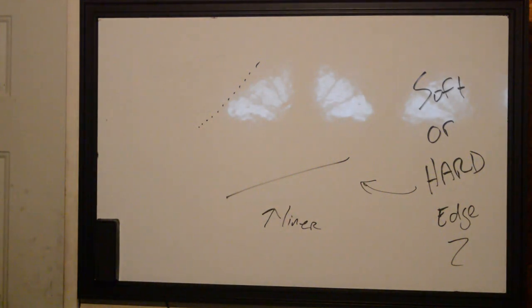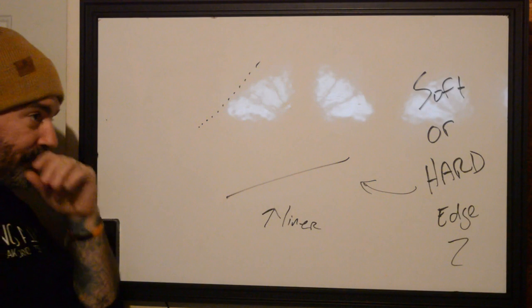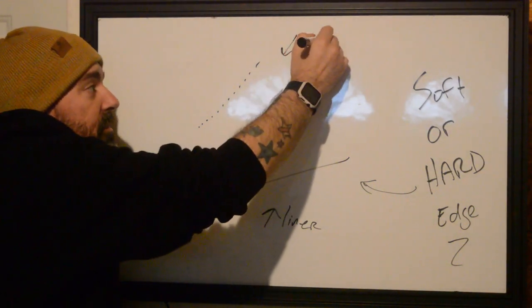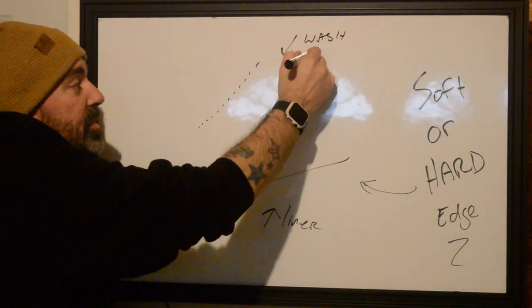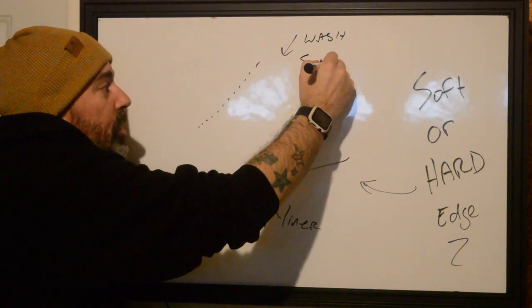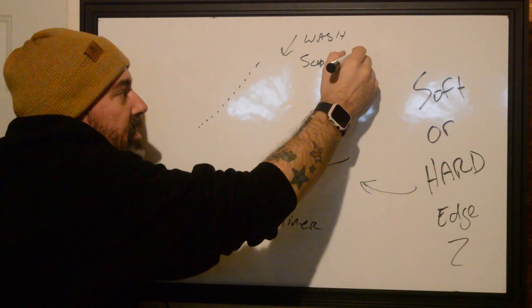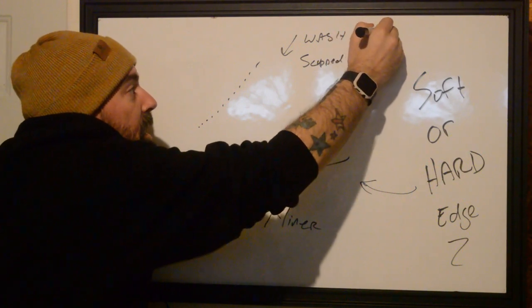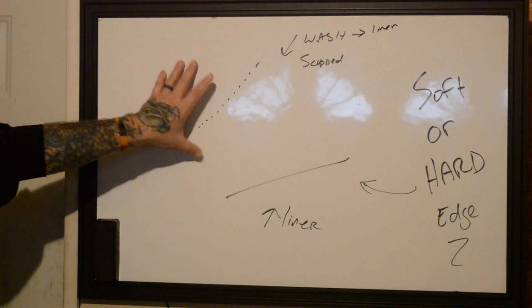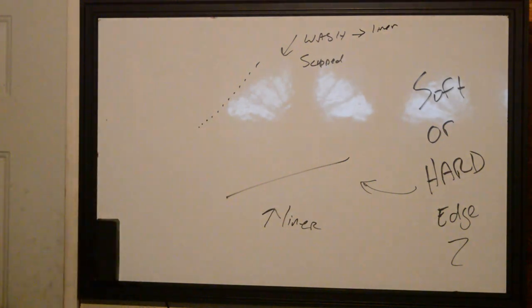Soft edges can get tricky. Normally when we're applying them, we can use liners, but normally these are either going to have to be wash lines if it's with a liner, or they're going to have to be scupped lines. Scupped. I'll just go scupped in general. So wash, scupped if we're going to be using a mag or a liner. What do I mean by scupped?